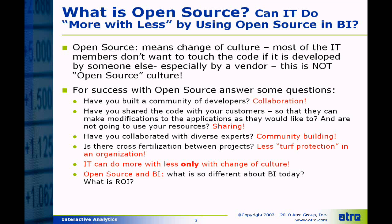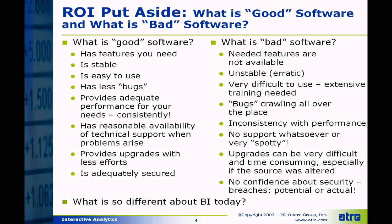One of the main things people are looking at is saving money — return on investment, ROI, is something you hear all the time. But let's set aside ROI: what's good software and what is bad software? Good software has the features you need, is stable, is easy to use, and has fewer bugs. It provides adequate and consistent performance, has reasonable availability of technical support when problems arise, provides upgrades with less effort, and is adequately secured.